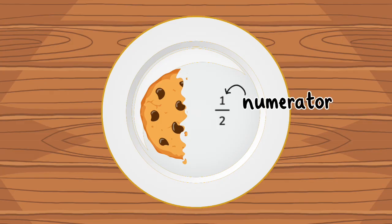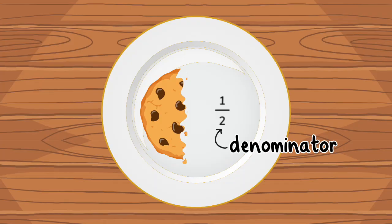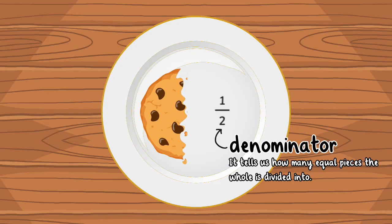The number on top is called the numerator. It tells us how many pieces we have. The number on the bottom is called the denominator. It tells us how many equal pieces the whole is divided into.